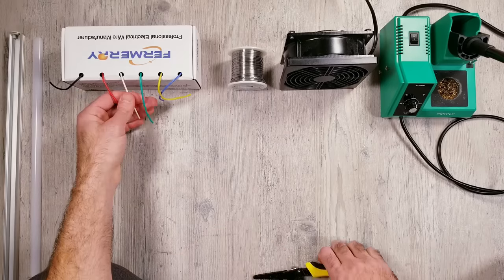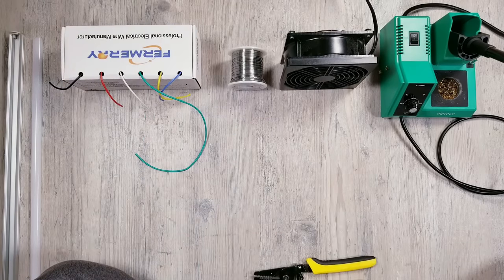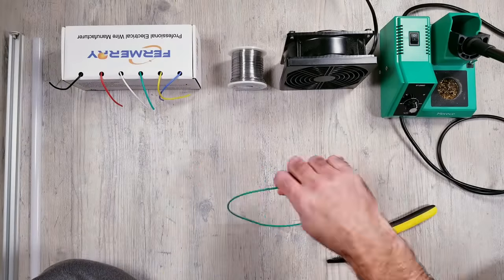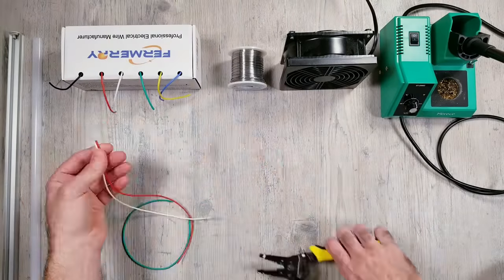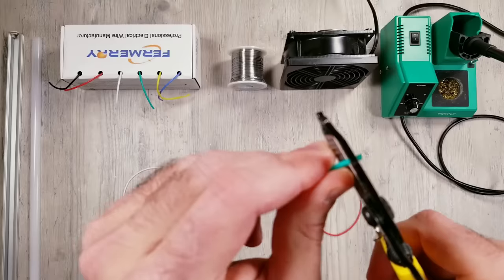For getting everything wired up I'm going to be using some 18 gauge silicone wires. Cut three wires at about 12 inches in length for each.